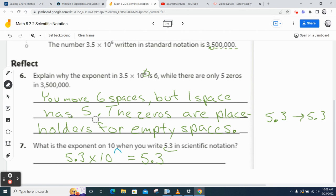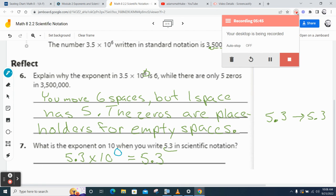By the way, what's 10 to the zero? One. What's one times 5.3? 5.3. So that works, right? Brilliant. Does that make sense? Thumbs up if you understand it. Thumbs down if that last one's confusing. All right.